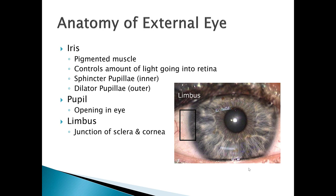The iris is the pigmented muscle of the eye; it controls the amount of light entering the retina via the sphincter and dilator muscles of the pupil. When the pupil becomes small, less light enters; when larger, more light enters. The limbus is the junction of the sclera with the cornea and is a very important anatomical landmark because many conditions do not pass the limbic line.